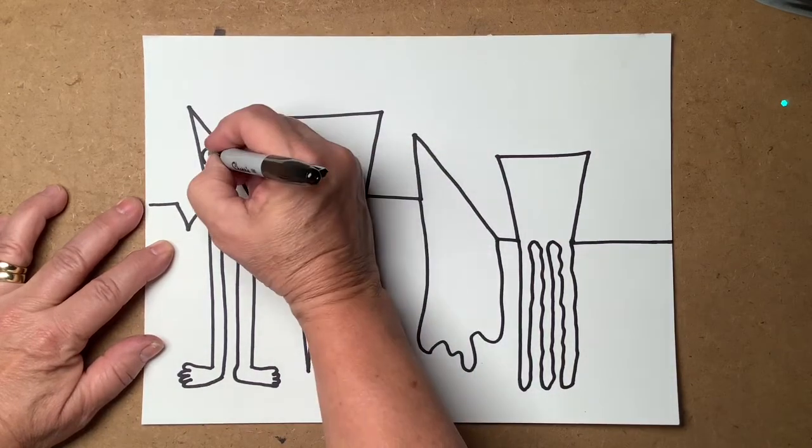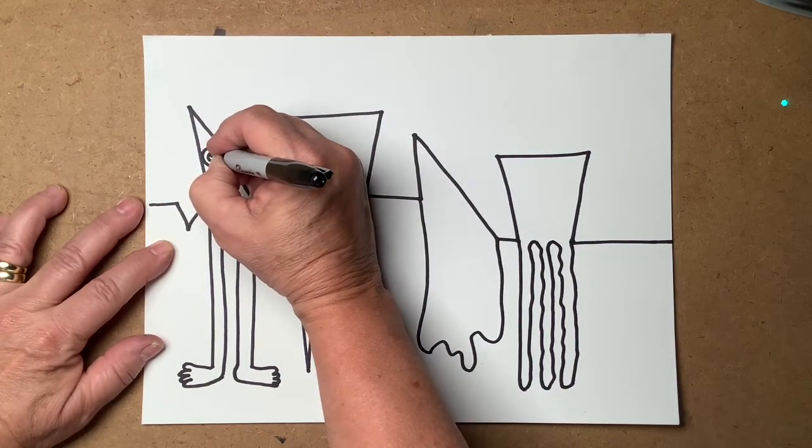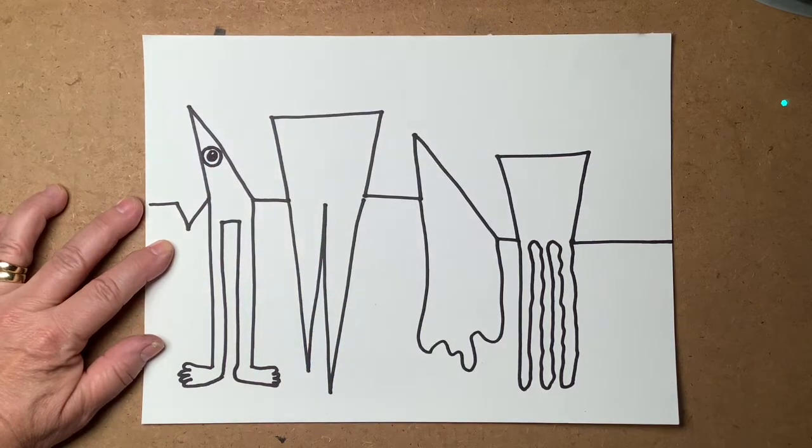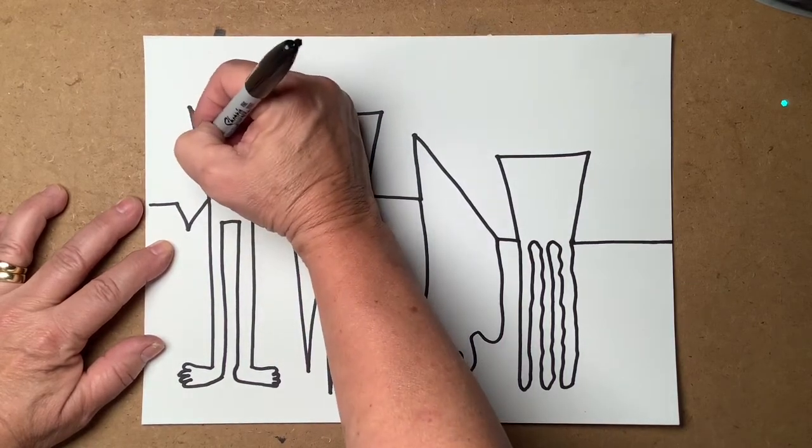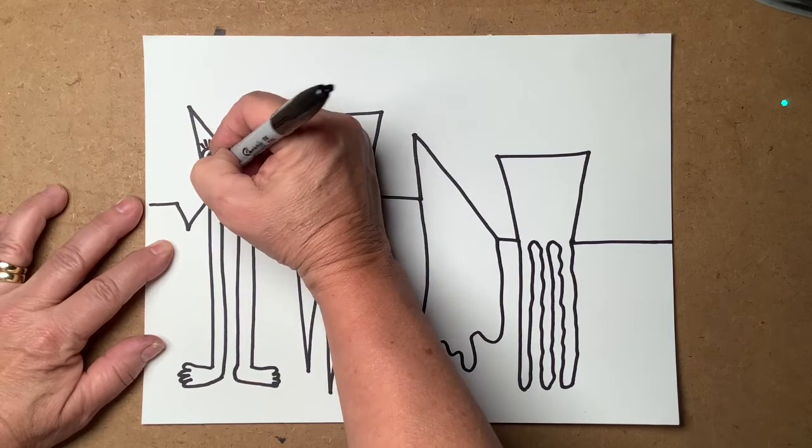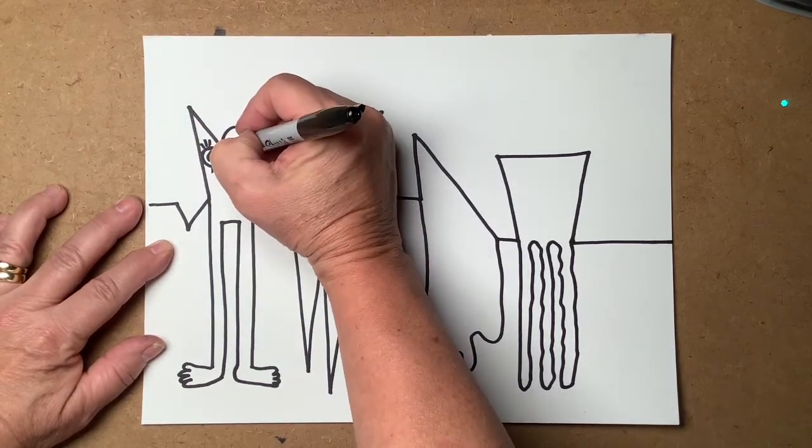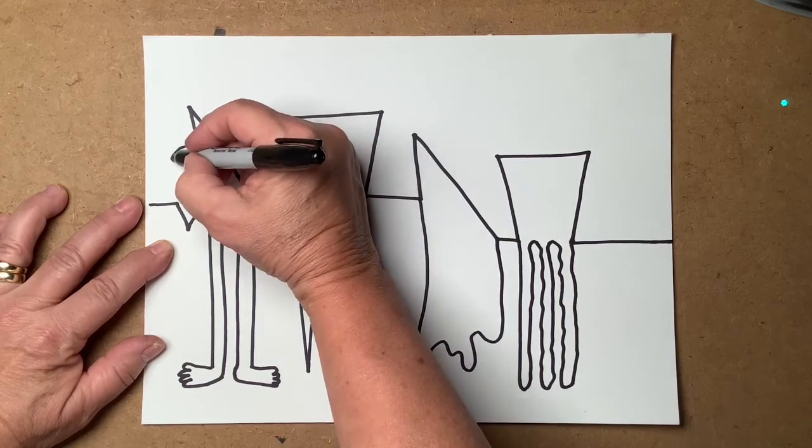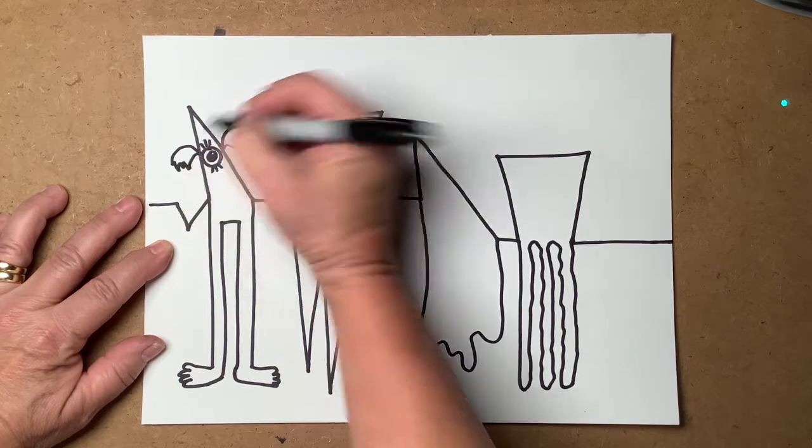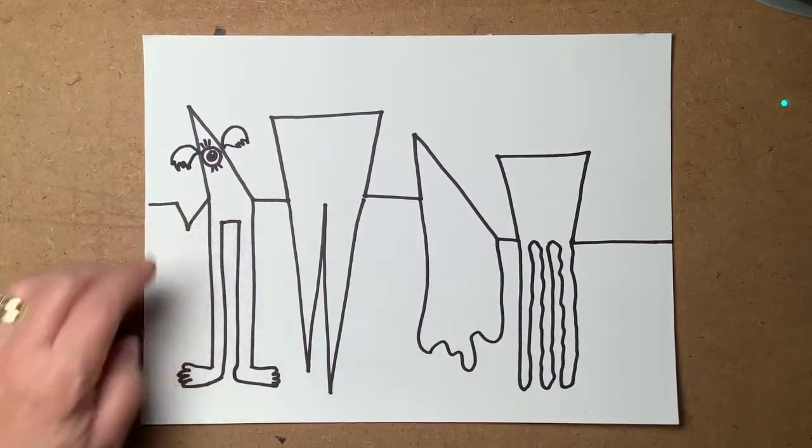This one, I'm going to make it a cyclops. One large eye. Maybe some eyelashes. And I'm going to give her a couple of little crazy arm things, wing things coming off the side of her head and then a mouth.